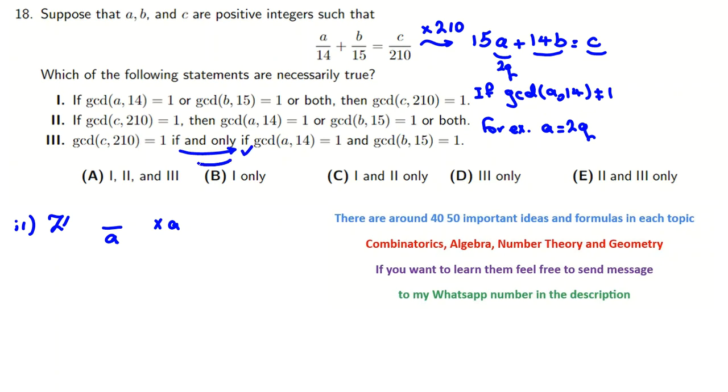Because, so from here to here, we proved by contradiction. Because we said, for example, if it is not 1, then like this, we reach contradiction. Similarly for this one. This one is correct. From right to left. Again, I want to use contradiction. For example, suppose C and 210 is not 1. Without loss of generality, C and 210, they have a common factor, like 2.